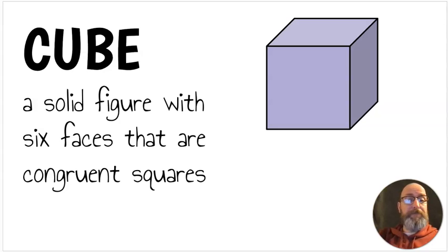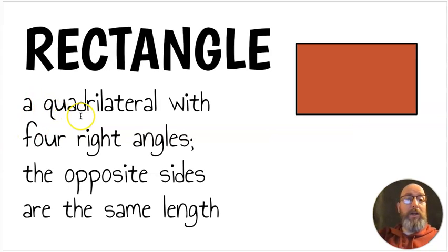Next, we have a cube. A cube is a solid figure with six faces that are congruent squares. You can see three faces here. Think about a box or maybe a Rubik's Cube. Those are all cubes. They're solid figures, and they have six faces. It's a cube if all six are the same size. Next, we have a rectangle. It's a quadrilateral, a polygon with four sides with four right angles, and we're going to go over those in just a minute. The opposite sides are the same length. So in a rectangle, these two sides are the same length, and these two sides are the same length. Yes, that means a square is a rectangle, but a square is a special kind of rectangle.